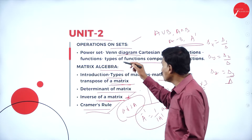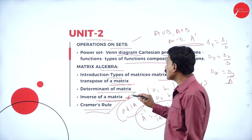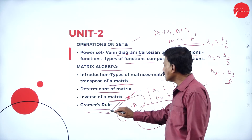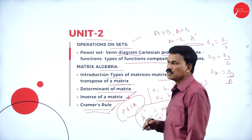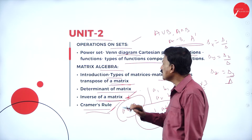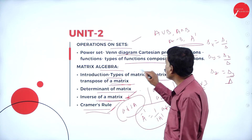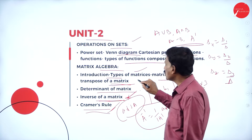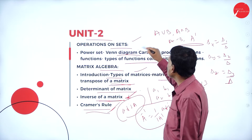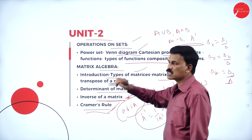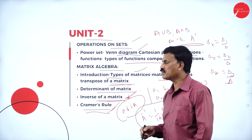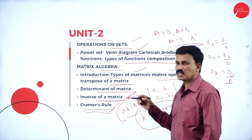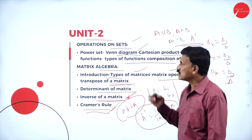In unit 2, you may expect a full question from inverse of a matrix and solving simultaneous equations by Cramer's rule, problems on types of matrices and operations on matrices, as well as representation of sets using Venn diagrams and composition and Cartesian product of sets.